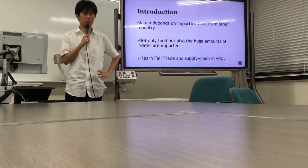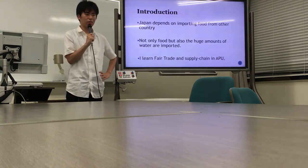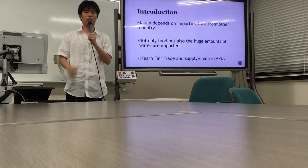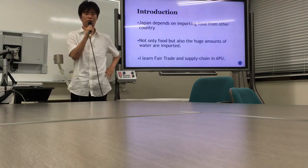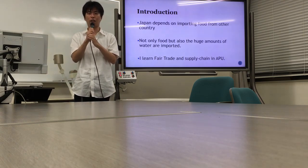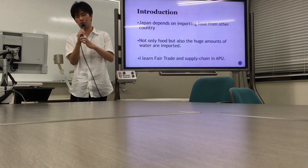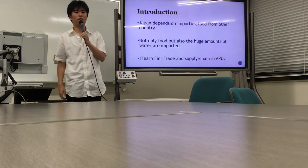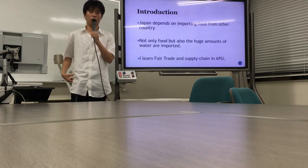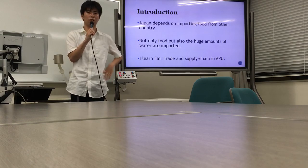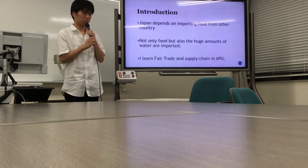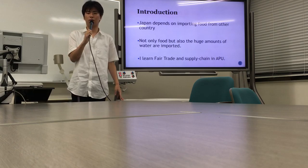Japan depends on importing food from other countries. In supermarkets you see beef, pork, vegetables, fish, wheat, and corn all imported from other countries. But this is not only about imported food — huge amounts of water are also imported. For agricultural production like rice or wheat, water is needed, and for raising cows and pigs, they also need water. So Japan imports too much water from other countries.